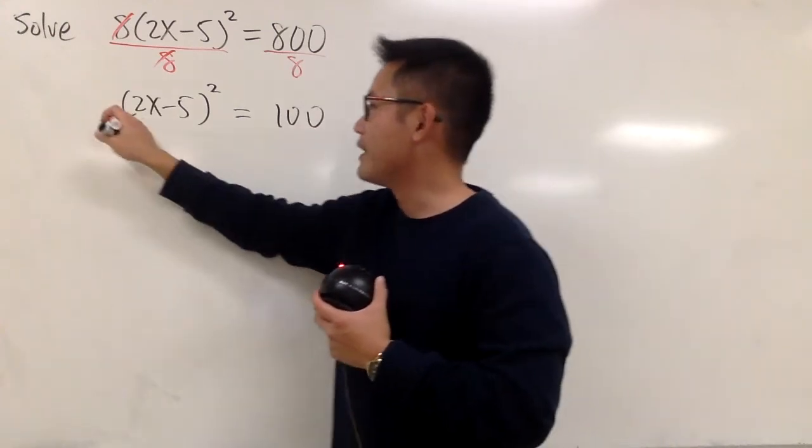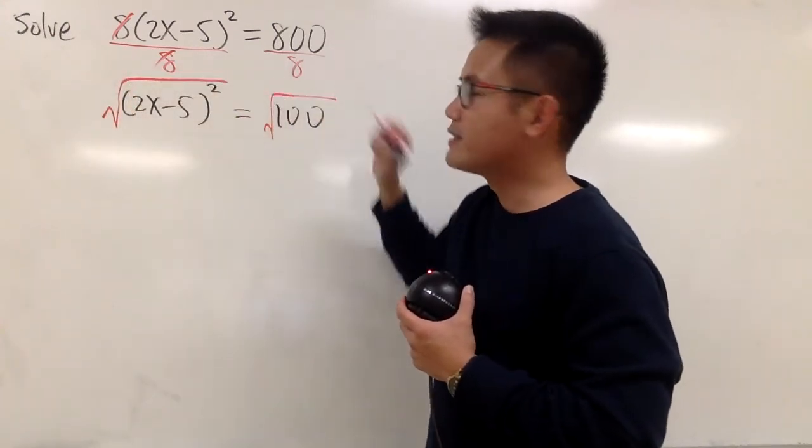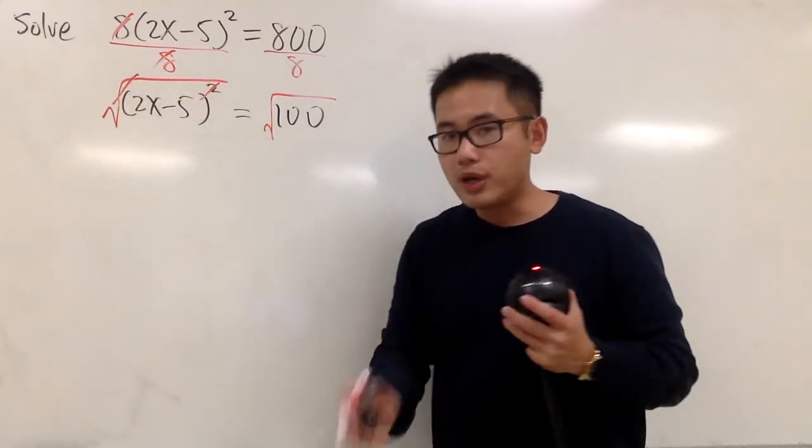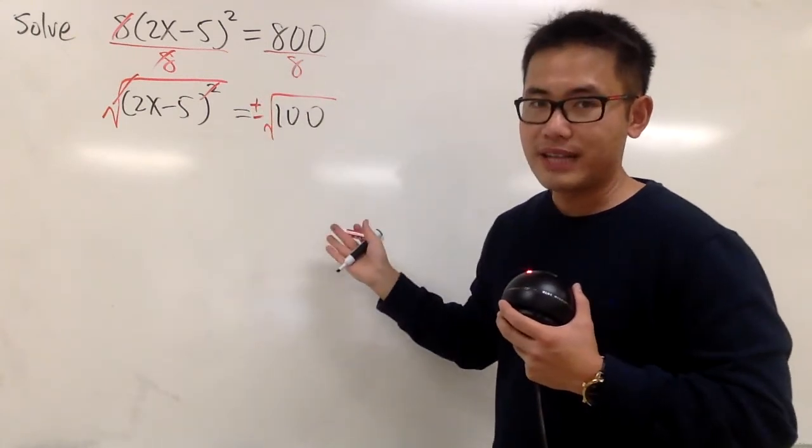From here, we can now take the square roots on both sides, so that this and that will be canceled. Hold it, and be sure you have the plus minus on the right-hand side.